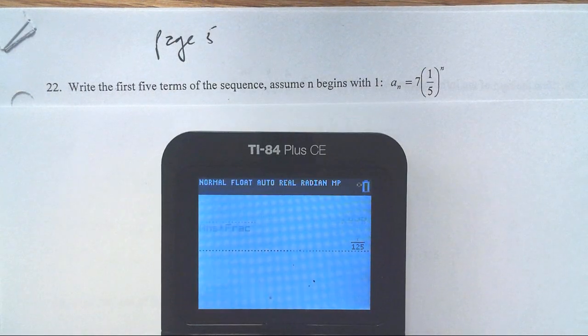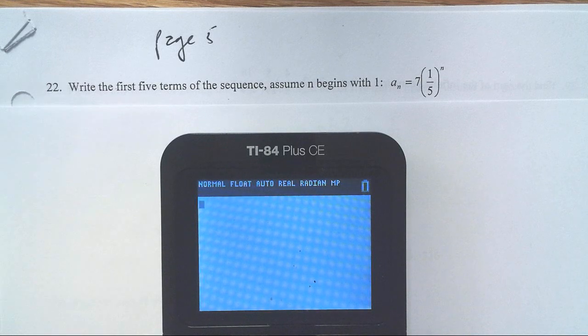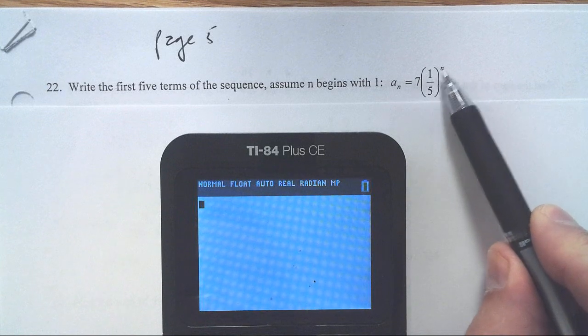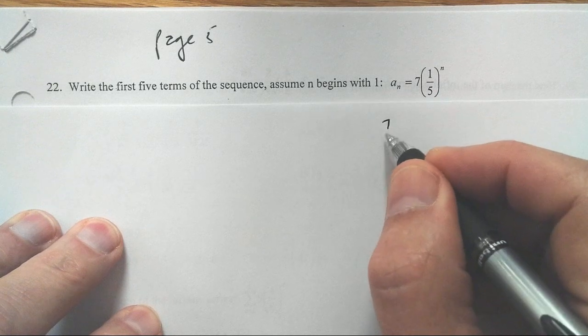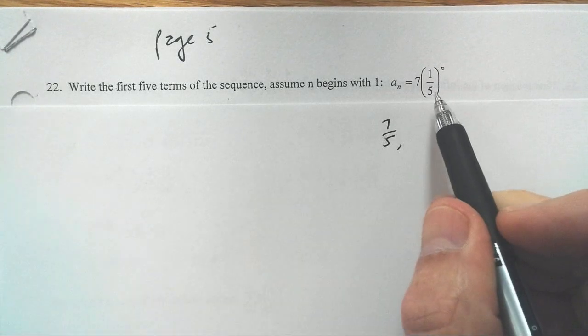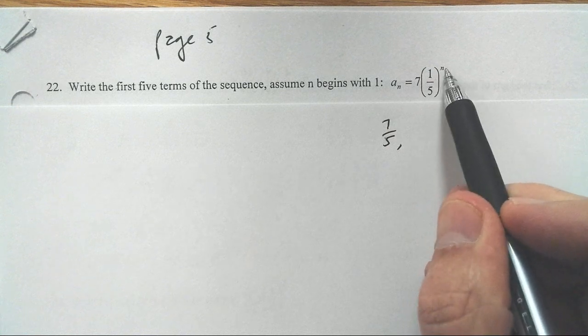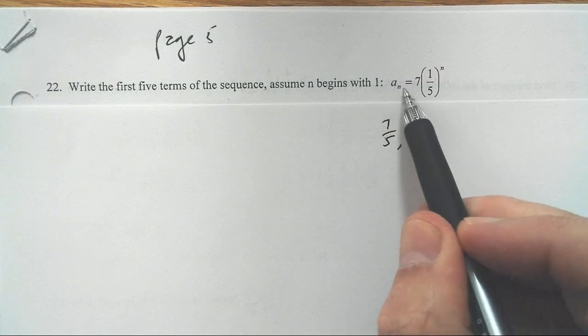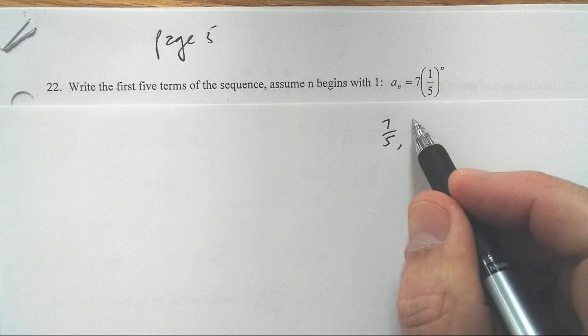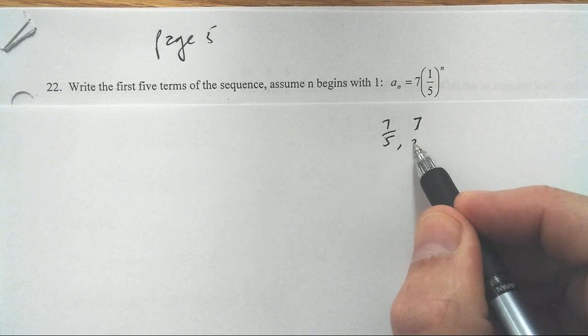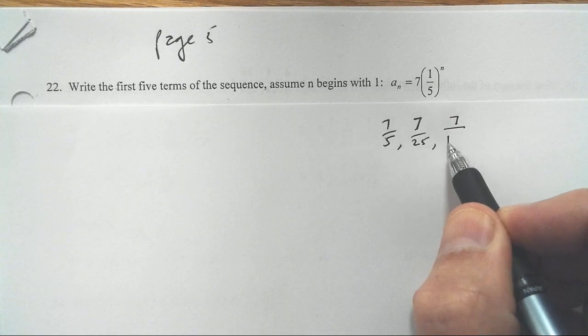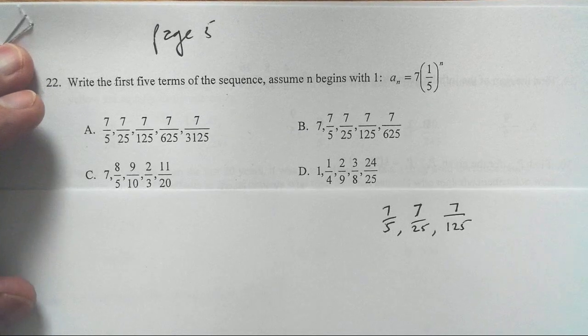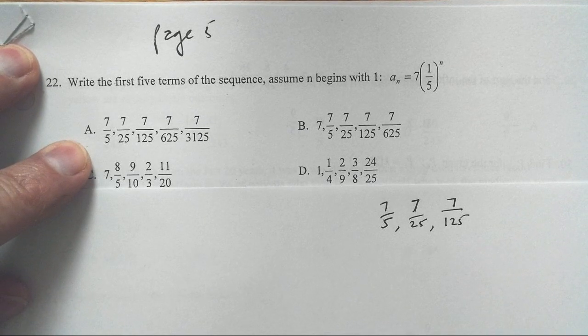So I'm going to do this just on the front of the calculator. The first term would occur when n is 1, so it's just 7 times 1/5 to the first, which is 7/5. And then each term after that, I'm going to multiply by an additional 1/5. Every single time my ratio becomes 1/5. So times 1/5, this would stay 7 but become 7/25. Times 1/5, this would remain 7, become 7/125.